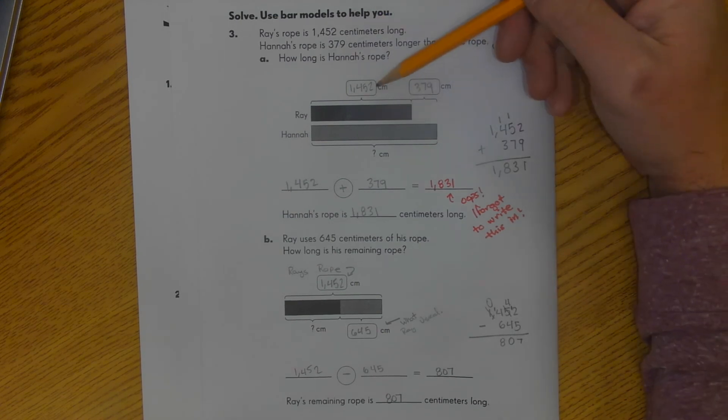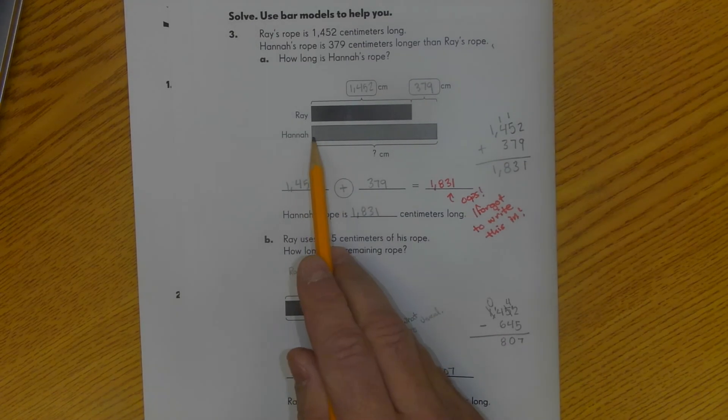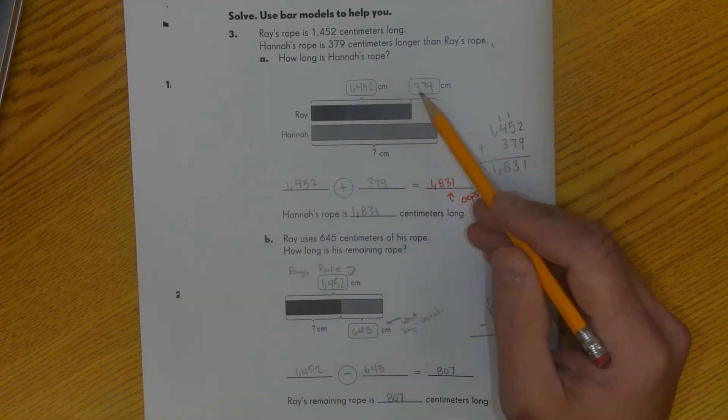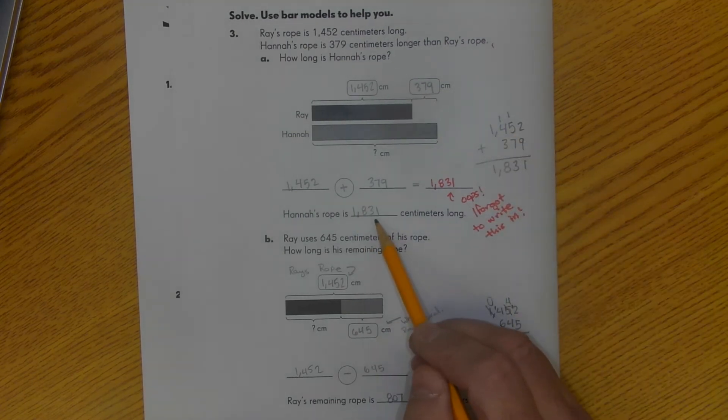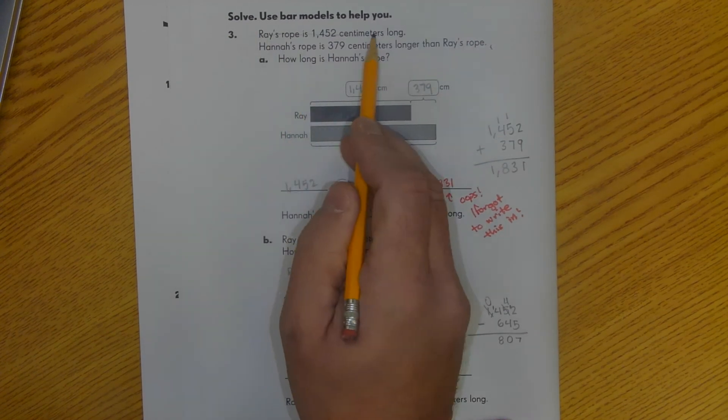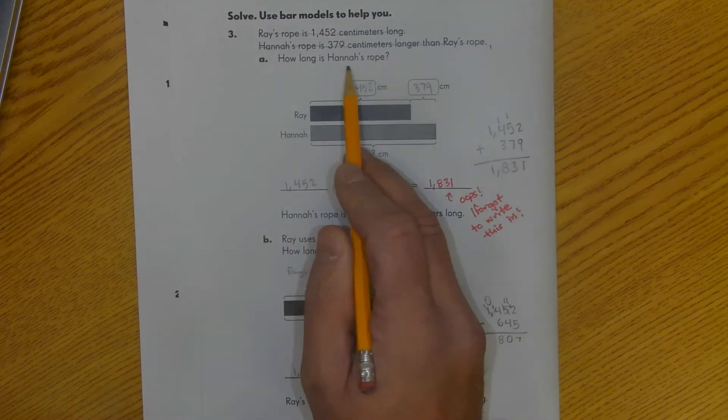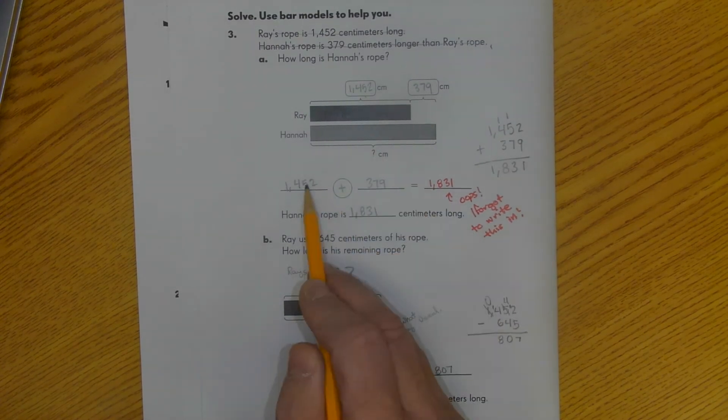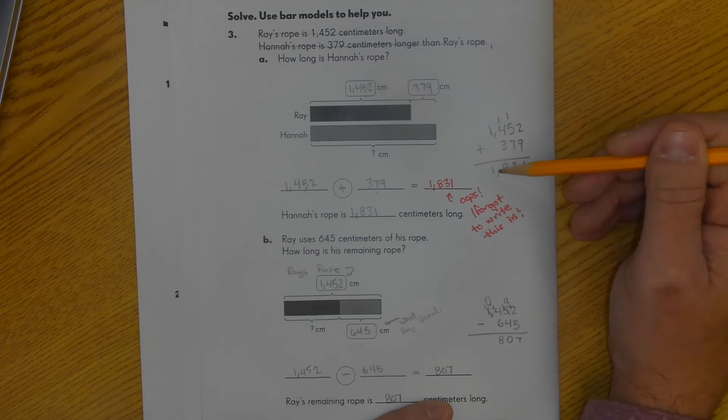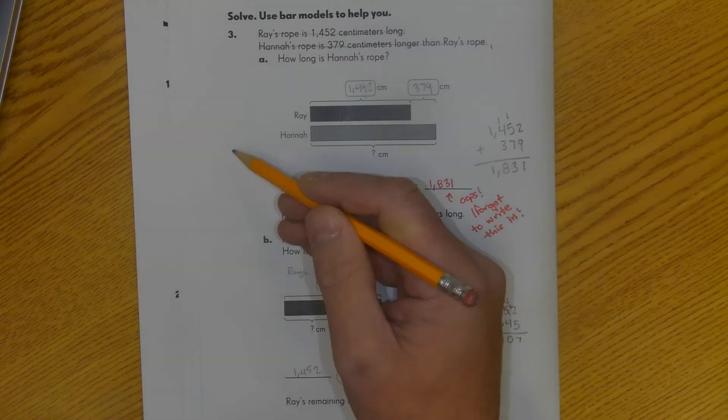Ray's rope is here, 1,452 centimeters. Hannah has 379 more centimeters. So that's this space. And together, Hannah's rope is this long. So if I add this and this, it's going to give me 1,831 centimeters. I know Ray's rope is 1,452 centimeters. I put that here. I know Hannah's rope is 379 centimeters longer. I put that here. And then I figured out how long Hannah's rope was. Well, I know I need to add these two together. 1,452 plus 379. I don't like horizontal, so I switched it to vertical, and I did my calculation. I ended up with 1,831. If you went wrong, it's likely that it's somewhere in here. So you might want to reset and do that problem again.